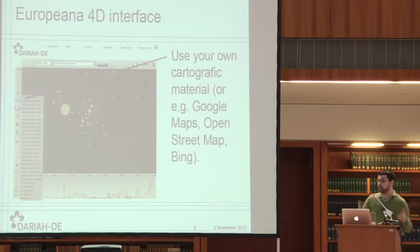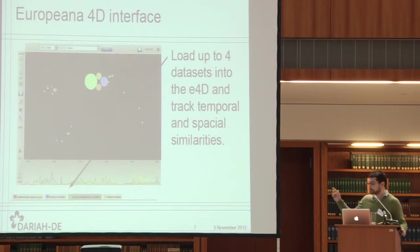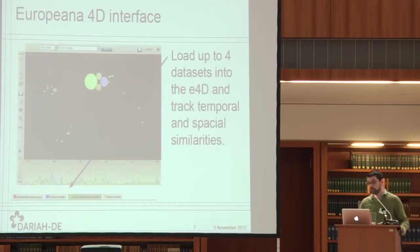You can select different maps to provide a better context for your data. If you're looking at ancient data, you might want an ancient layer underneath. One feature that we are testing right now is to display overlay maps, so you'll be able to show a scanned map on top to plot your geo and temporal data. Another interesting feature is to compare multiple data sets at the same time — you can load multiple data sets and see the differences or patterns with respect to time and space.